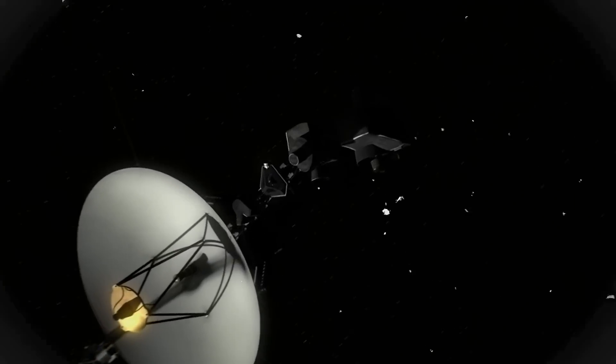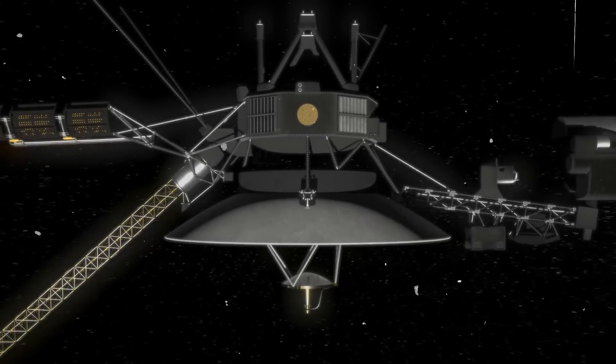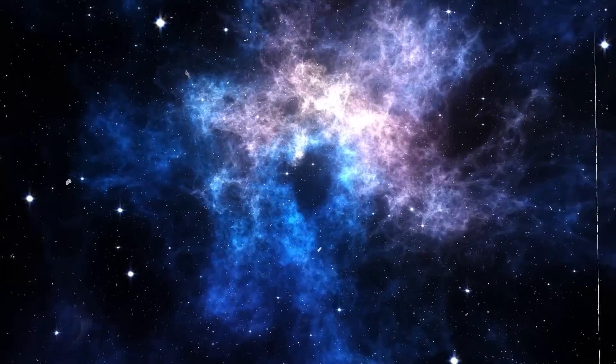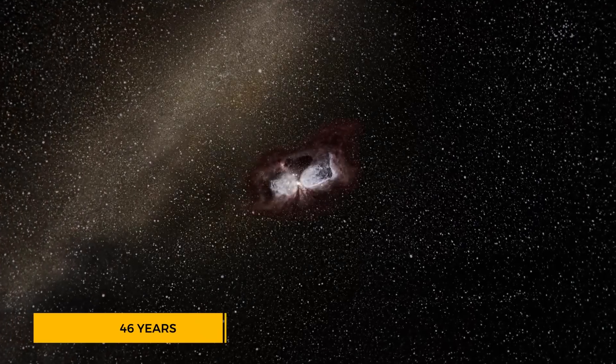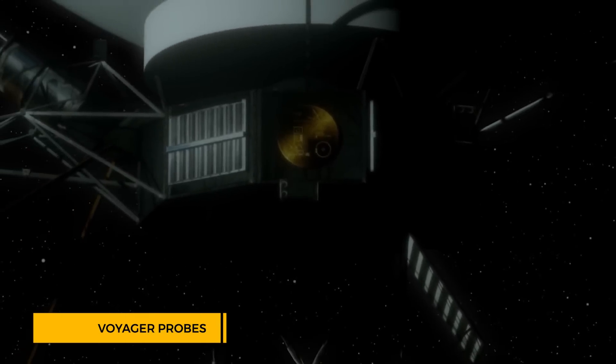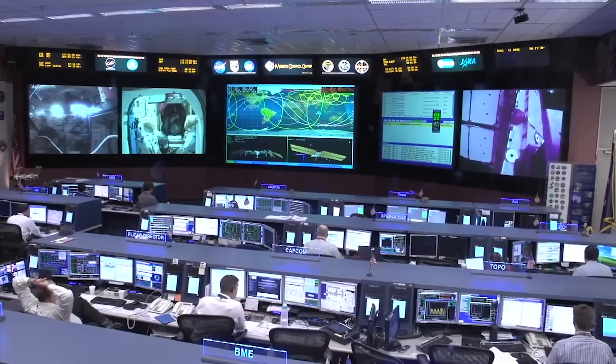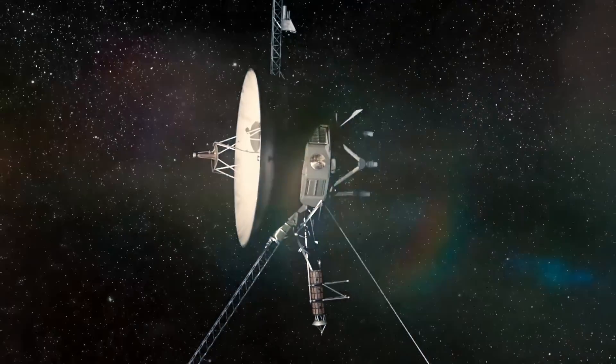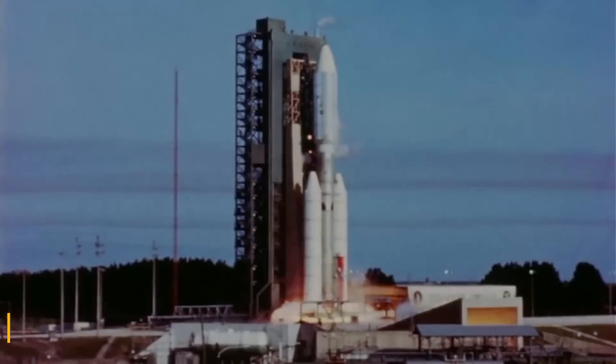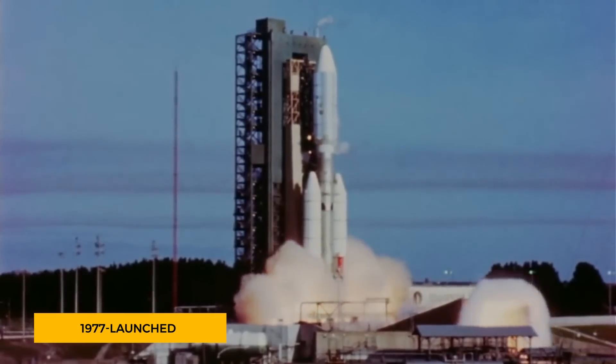The most distant human-made object, NASA's Voyager 1 spacecraft, is in interstellar space, the space between the stars. After 46 years of hurtling through the cosmos, NASA's Voyager probes have made a discovery that's sending shockwaves through the scientific community. Despite their limited memory and sluggish data rates, these 1977 launched spacecraft have been trailblazers in our quest to understand the universe.